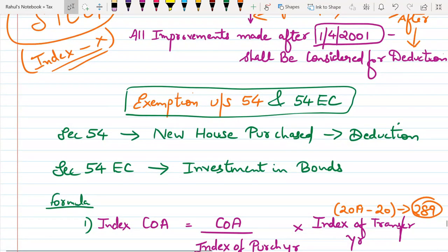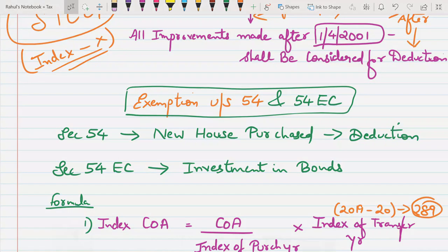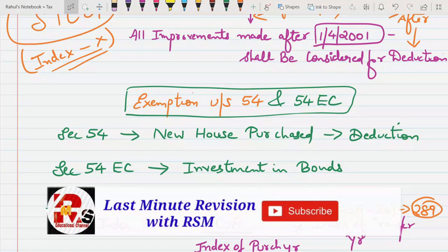Then there are 2 exemption points. Exemption under Section 54: if you have purchased a new house, you can claim a deduction. Exemption under Section 54EC: if you have invested in bonds, you will also get a deduction there.